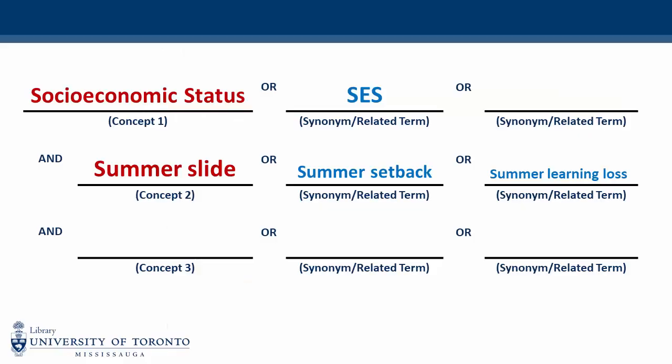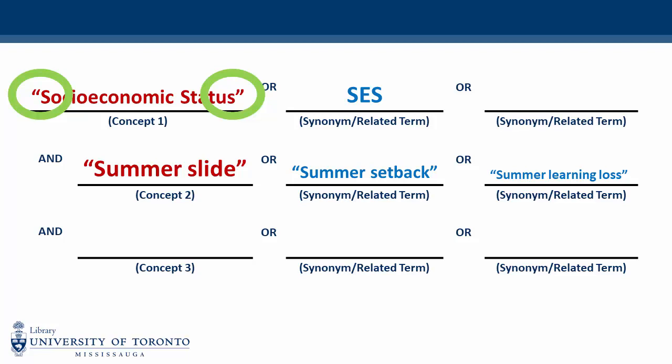The final stage of creating a search string is adding special characters to your search. The first one you'll want to consider is quotation marks. Quotation marks are used to search for phrases or concepts that are more than one word — for example, socioeconomic status, summer slide, summer setback, and summer learning loss. When we use quotation marks, we are telling the database that the words within the quotation marks must appear as an exact phrase in our search results.